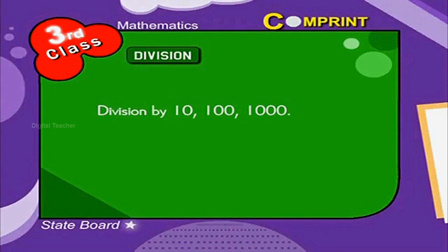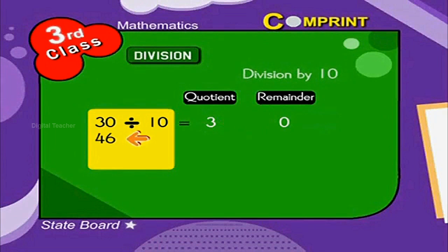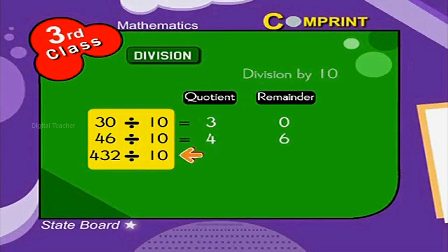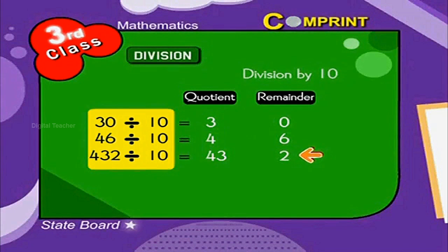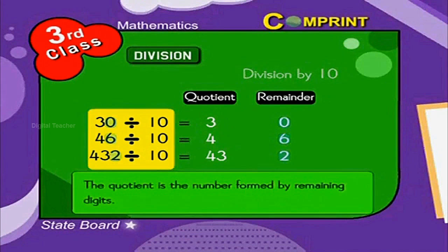Division by 10, 100, and 1000. 30 divided by 10 is equal to 3 as quotient, remainder 0. 46 divided by 10 is equal to 4 as quotient, remainder 6. 432 divided by 10 is equal to 43 as quotient, and the remainder is 2. When a number is divided by 10, the remainder is the digit in the 1's place of the number. The quotient is the number formed by the remaining digits.